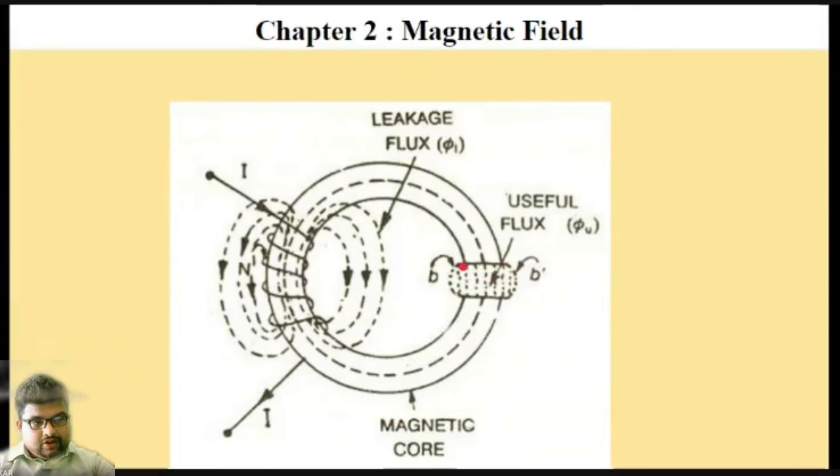When the air gap is larger, this is fringing flux. The useful flux is different, but the core part spreading out is fringing flux.